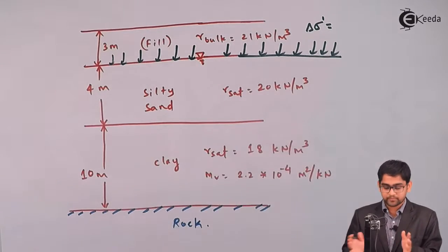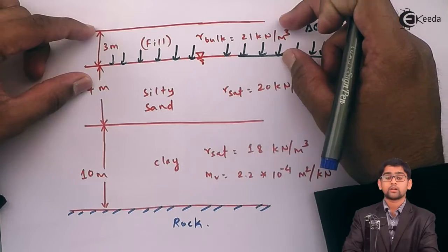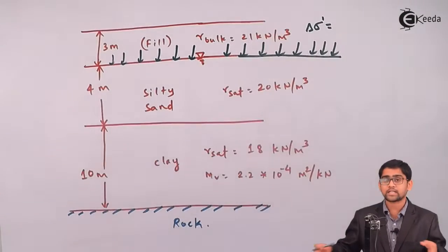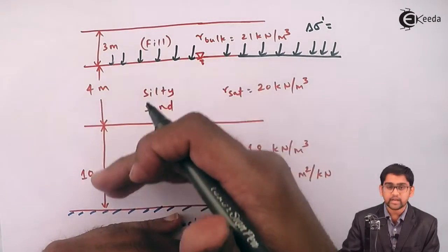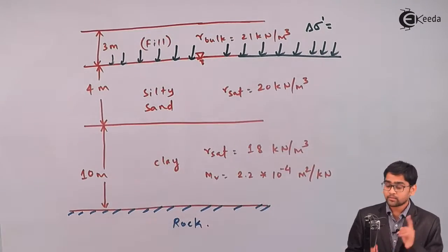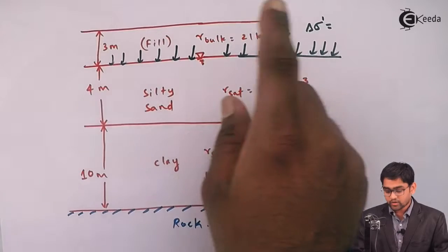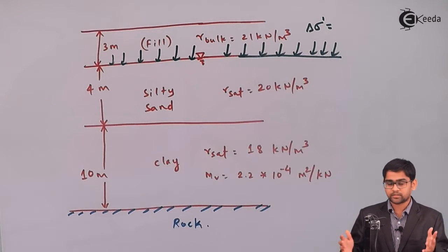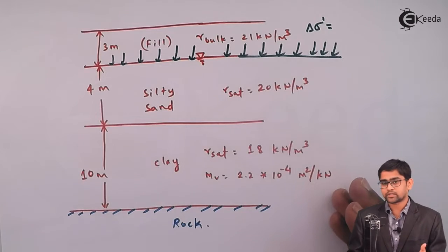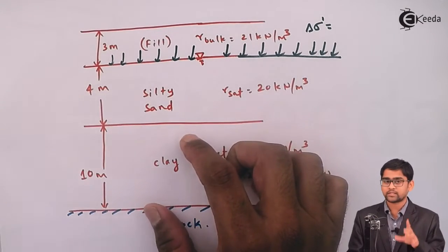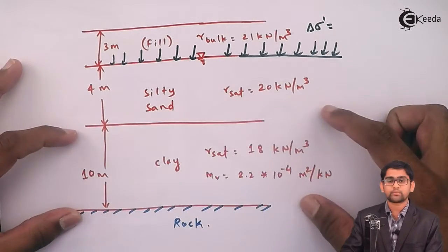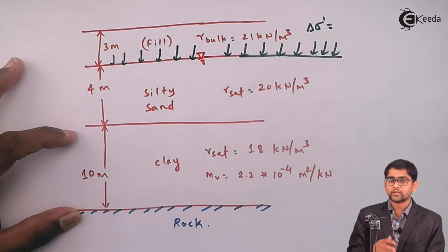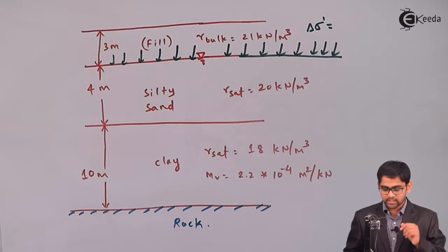For this problem, the fill is placed over a large area — it's a land reclamation project — so the increase in stresses imposed on the clay will be uniform, with no variation as you go down within the clay layer. But remember, if there is a variation in stresses due to the placement of a structure, you need to take the average stresses at the middle of the clay layer. In that case, you should divide the compressible layer into a number of equal parts to increase calculation accuracy.